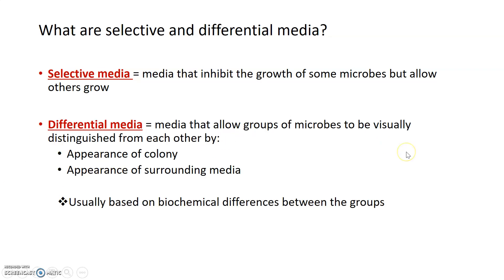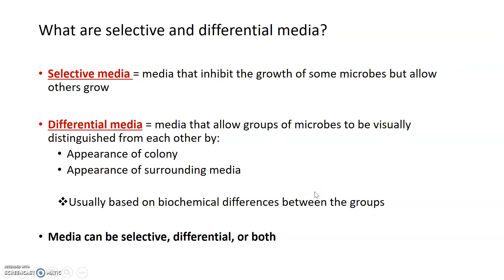A differential medium is one that allows different groups of microbes to be visually distinguished from each other. This might be by distinguishing the way a colony looks on differential media plates, as well as how the surrounding media looks. Differential media usually use biochemical differences between the two groups to allow you to visually differentiate between them.